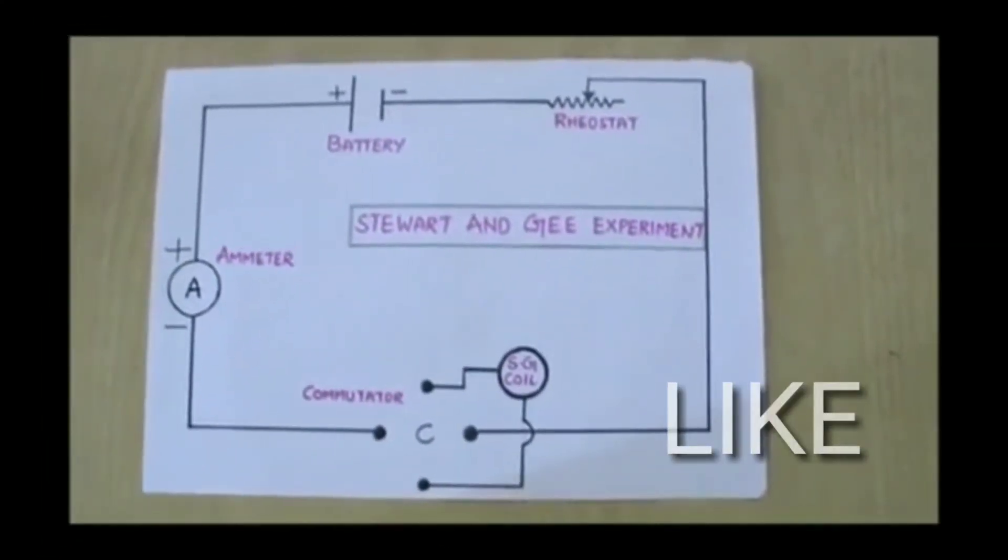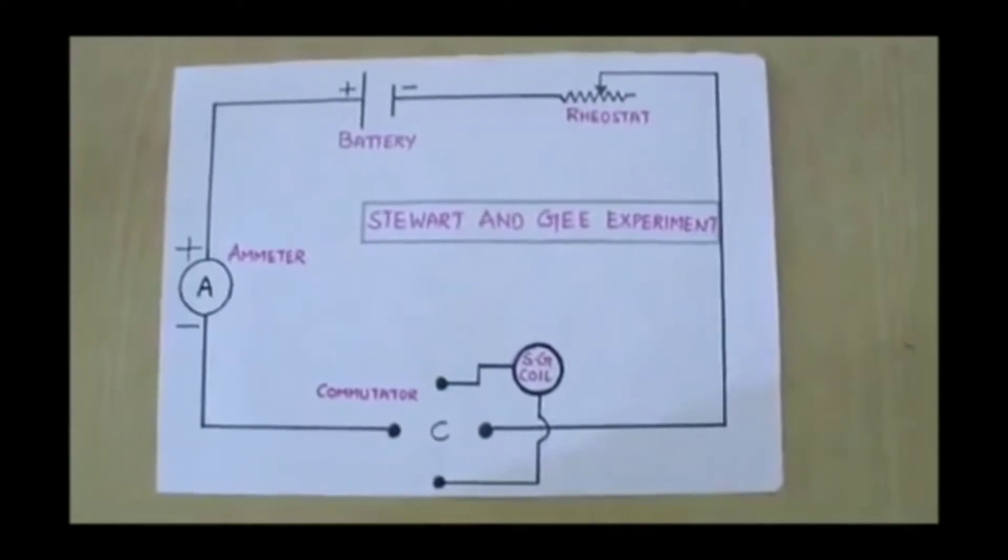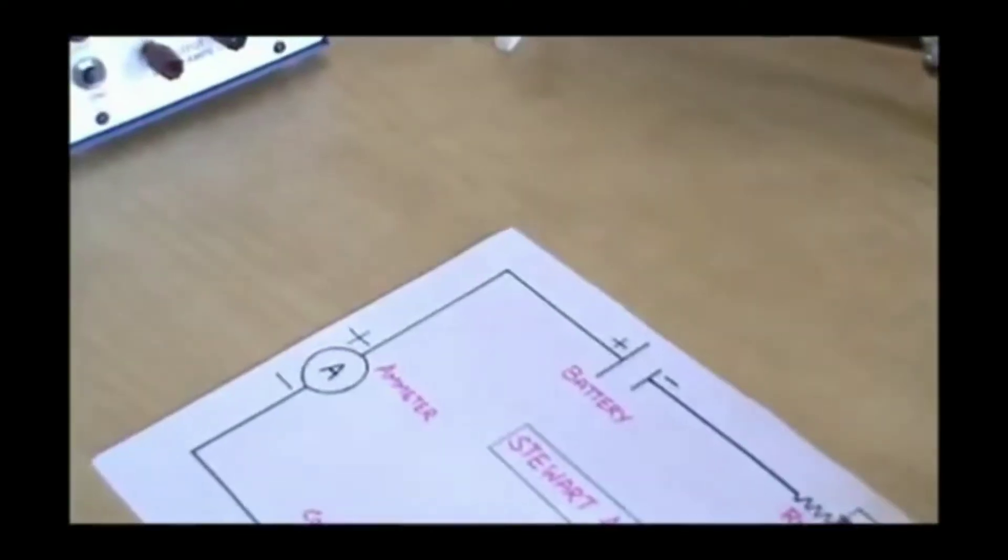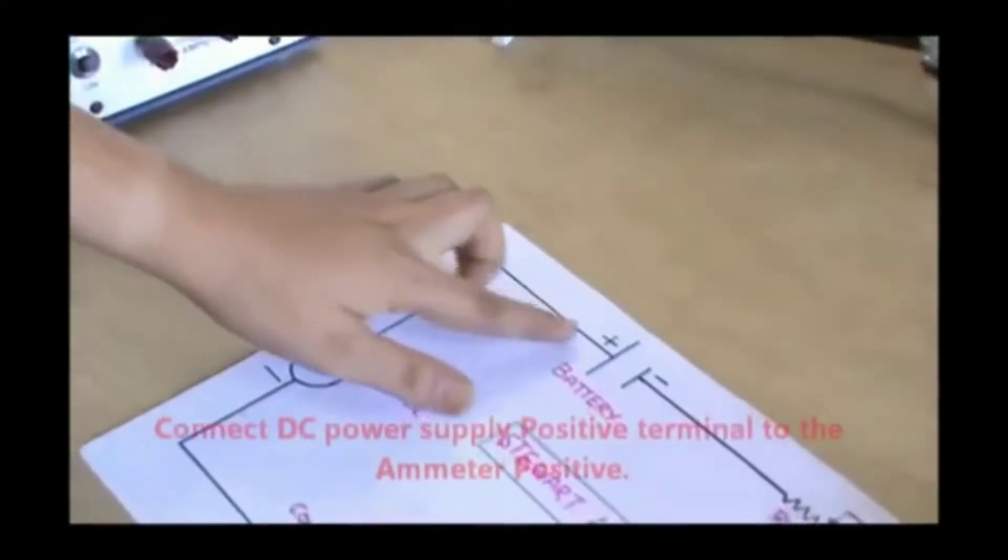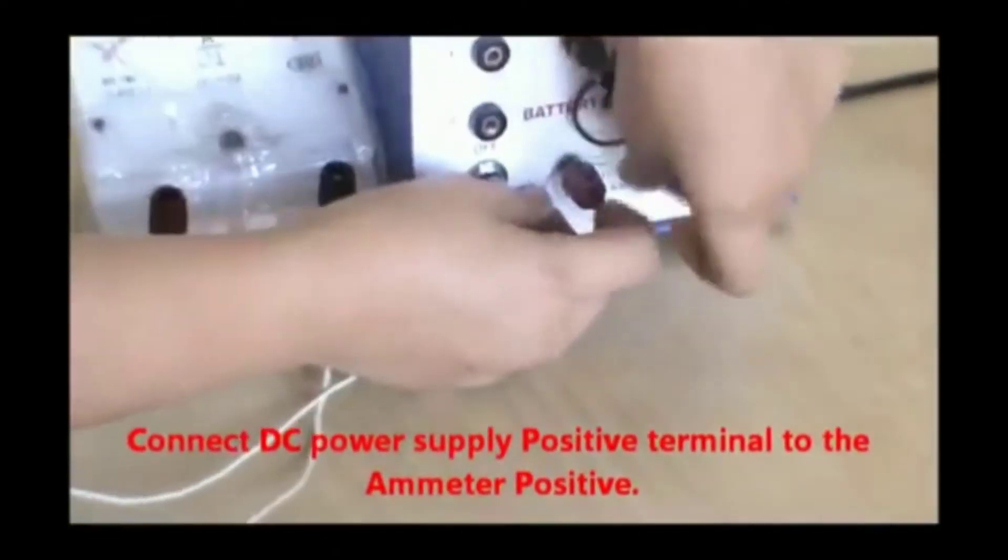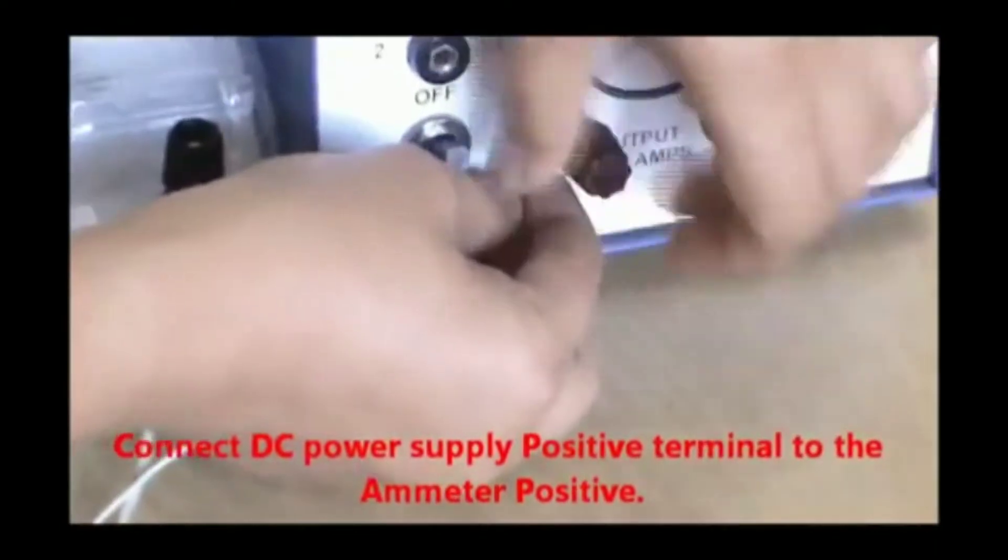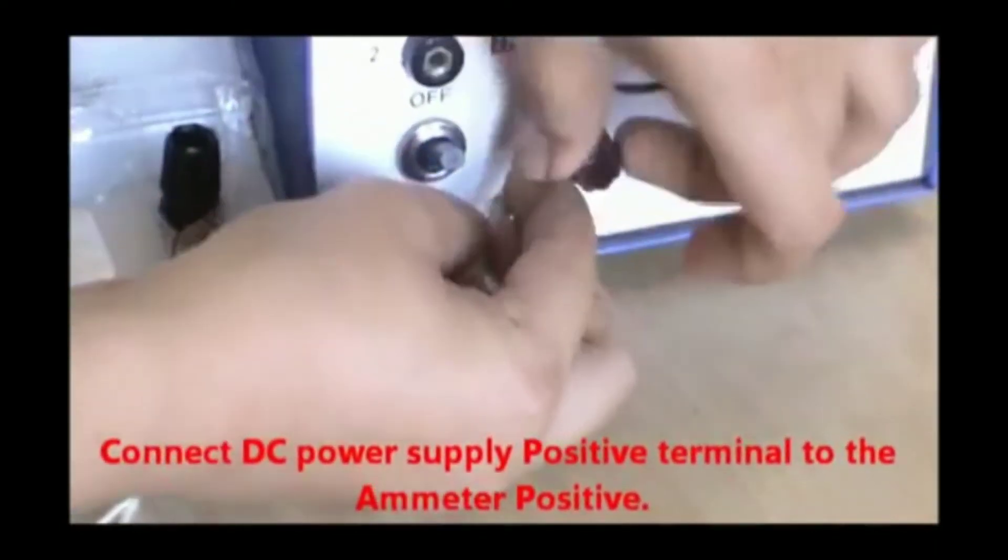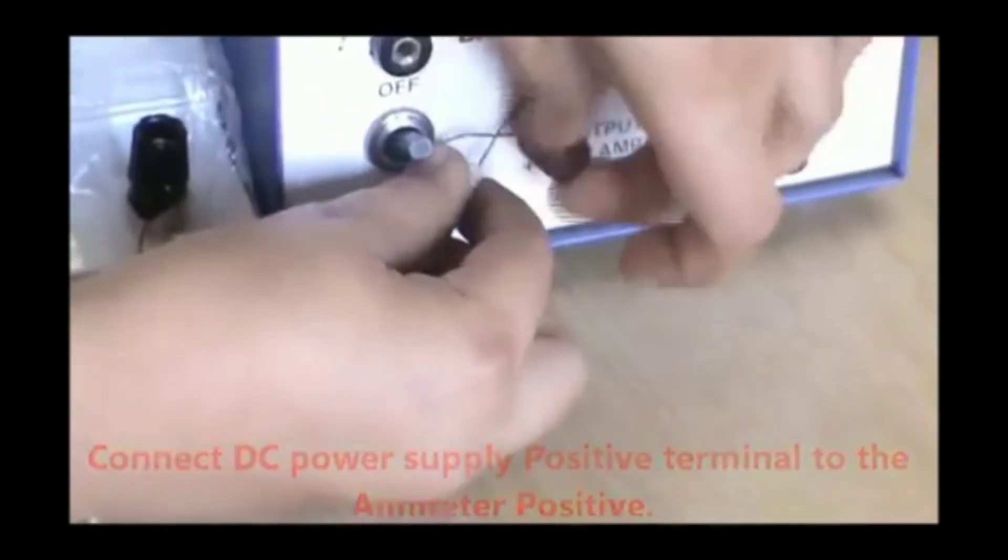Connect the connections as per the circuit shown without any loose contacts. Connect DC power supply positive terminal to the ammeter positive terminal. Here we are using the ammeter to determine the current.